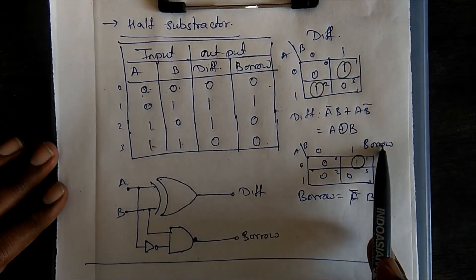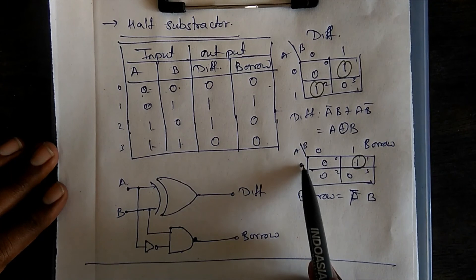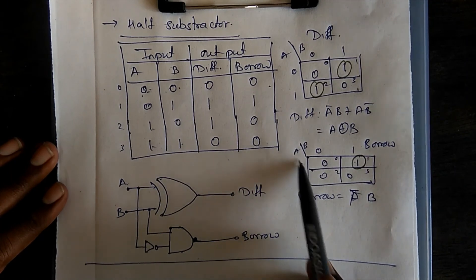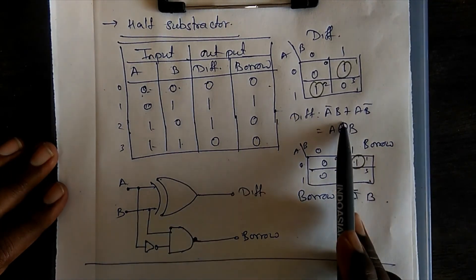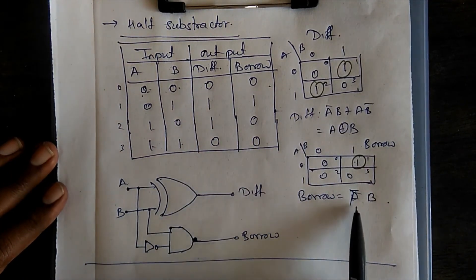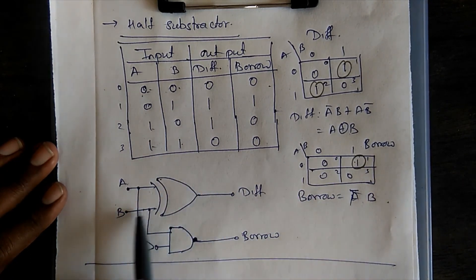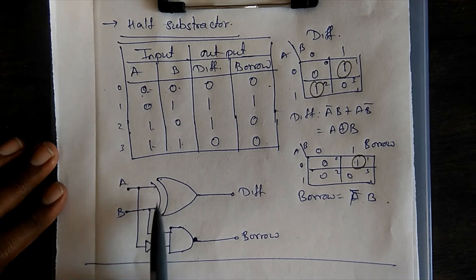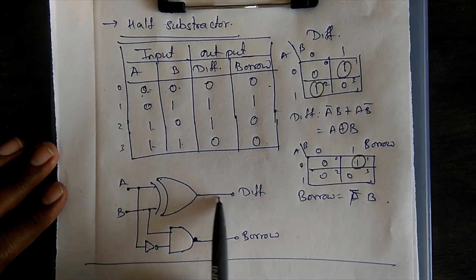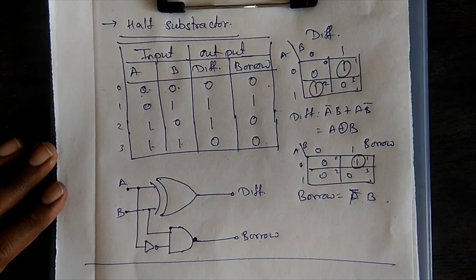For the borrow, there is only a 1 in one cell, giving the equation: Borrow = A̅·B. So the circuit has two inputs A and B going into an XOR gate for the Difference, and A-bar with B going into an AND gate for the Borrow. Thank you.